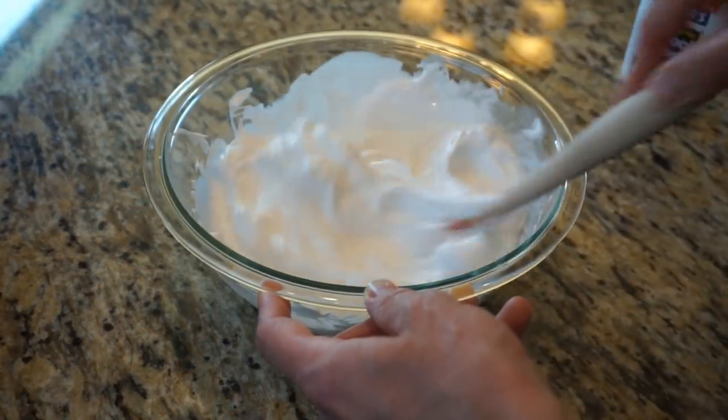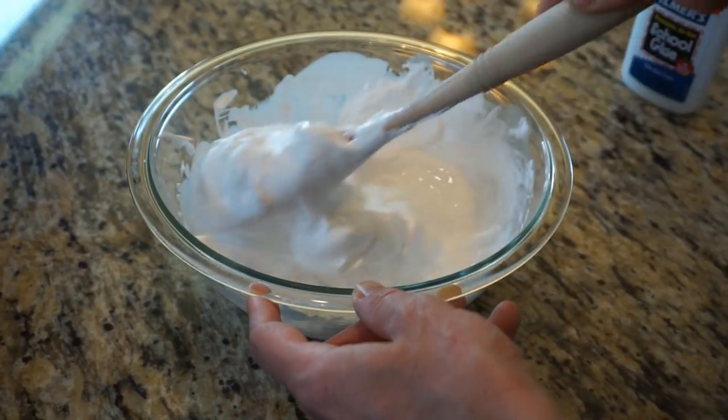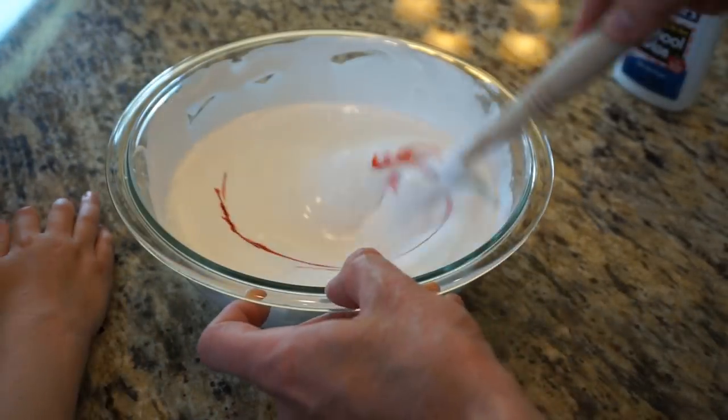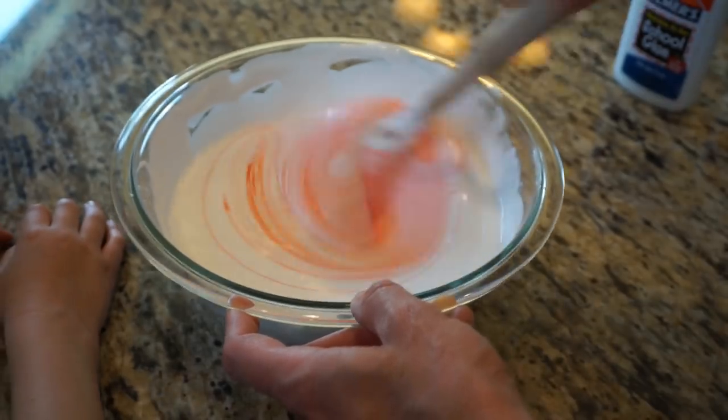So what happens here is the liquid starch acts as a binding agent for the glue and so it hooks all the long polymer chains together and makes a slime.